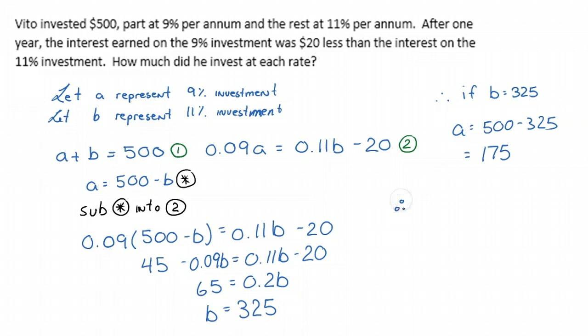So therefore, Vito invested $175, pardon me, at 9% and $325 at 11%.